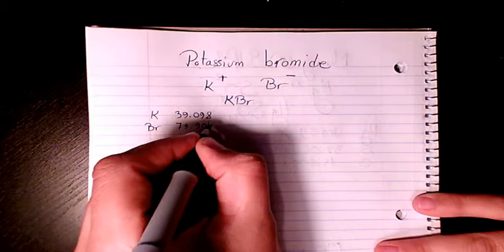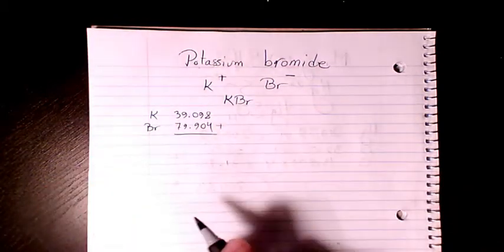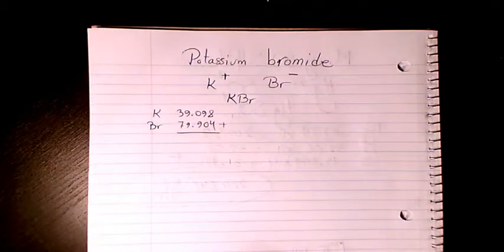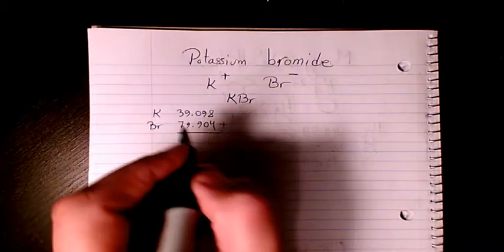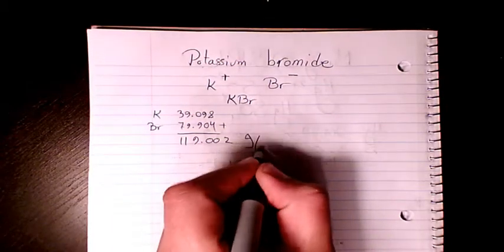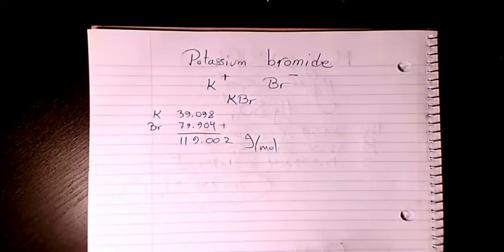Then you need to add these two, so we're gonna say 39.098 plus 79.904. That makes it 119.002 grams per mole. So that's the molar mass or molecular weight of potassium bromide.